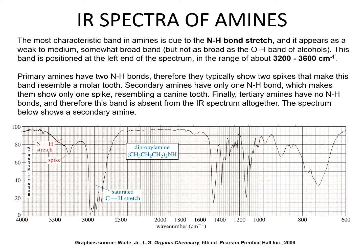The most characteristic band in amines is due to the N-H bond stretch, appearing as a weak to medium somewhat broad band — but not as broad as the O-H band of alcohols — positioned around 3600 centimeters to the minus one. Primary amines have two N-H bonds, so they typically show two spikes resembling a molar tooth. Secondary amines have only one N-H bond, showing only one spike like a canine tooth. Tertiary amines have no N-H bonds, so this band is absent. The spectrum shown is for dipropylamine, a secondary amine, showing one spike for the N-H stretch and a strong peak for the C-H stretch at 3000.